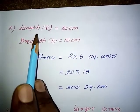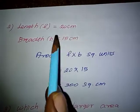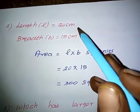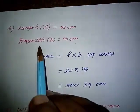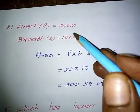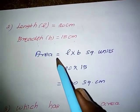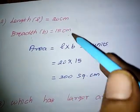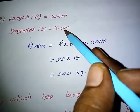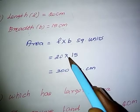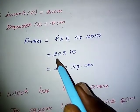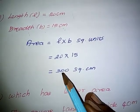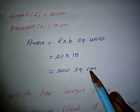Question number two: length l equals 20 centimeters, breadth b equals 15 centimeters. Since the sides are different, this is a rectangle. Area equals l into b. So 20 into 15: two 15s are 30, then one zero — area of the given rectangle is 300 square centimeters.